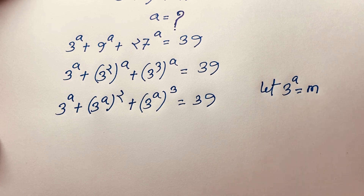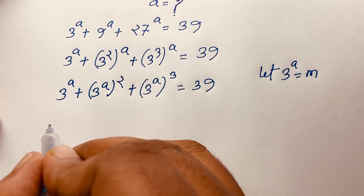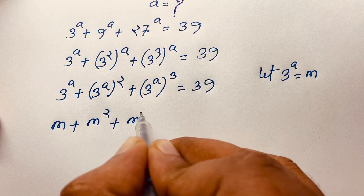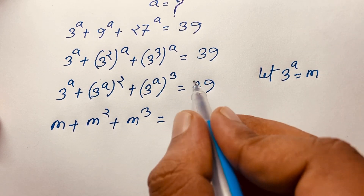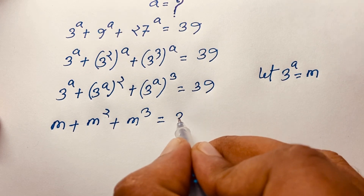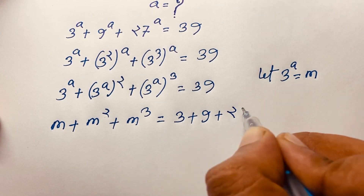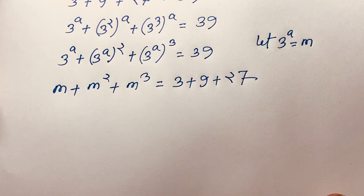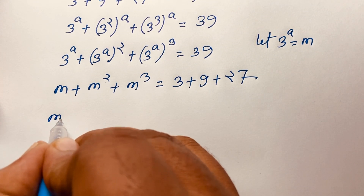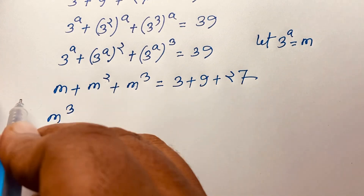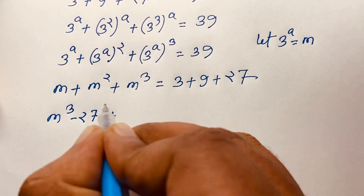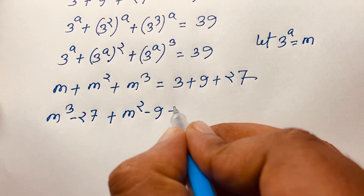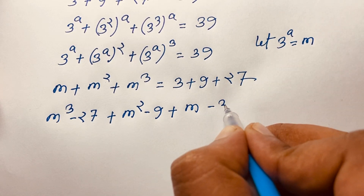We let m equal 3 to the power a. So the expression becomes m plus m squared plus m cubed equals 39. We also note that 39 equals 3 plus 9 plus 27. So rearranging: m cubed minus 27, plus m squared minus 9, plus m minus 3, equals 0.